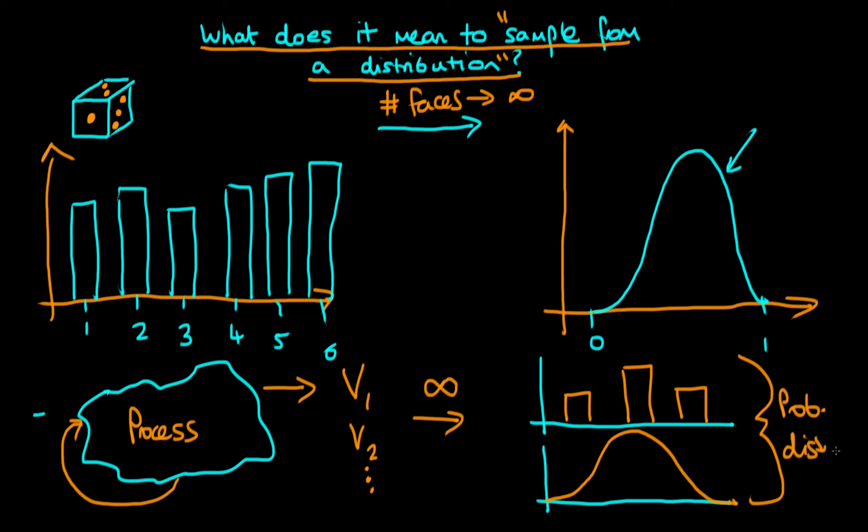This is the key to understanding what it means to sample from a distribution. Because when you think about just sampling from a distribution—say I have a distribution between zero and one and I sample a value from that and get 0.35—that doesn't really make that much sense.